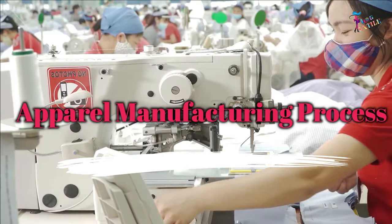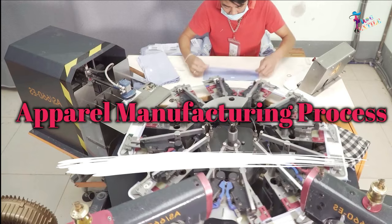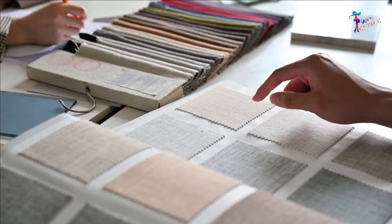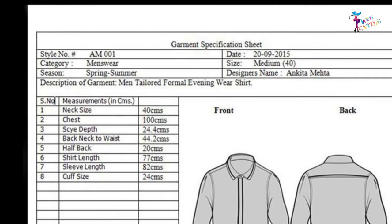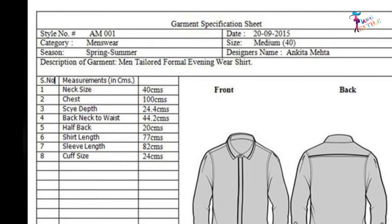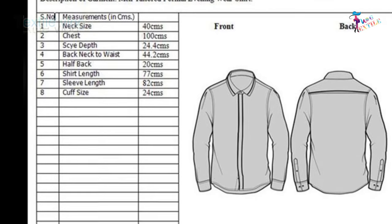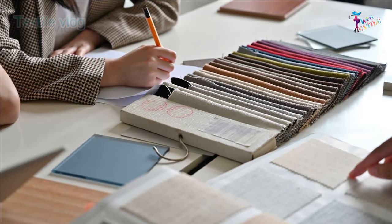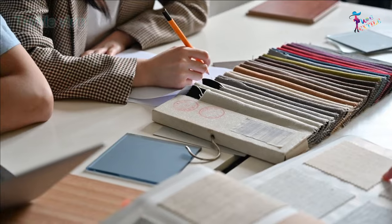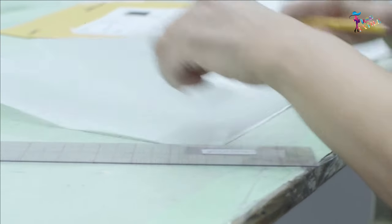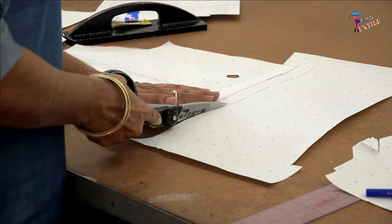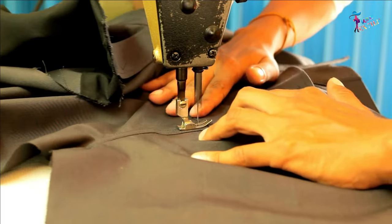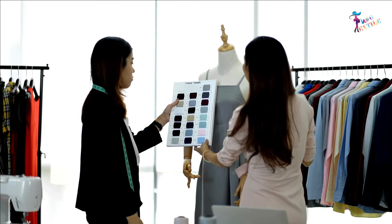Apparel is the final product of textiles, known as a piece of clothing. The buyer sends the technical sheet and artwork of an order to the merchandiser. After placing an order, patterns are first made, and according to the pattern, sample garments are made for buyer approval.